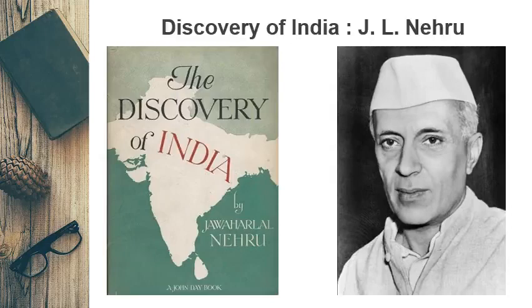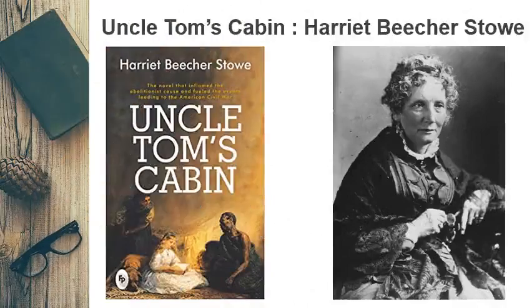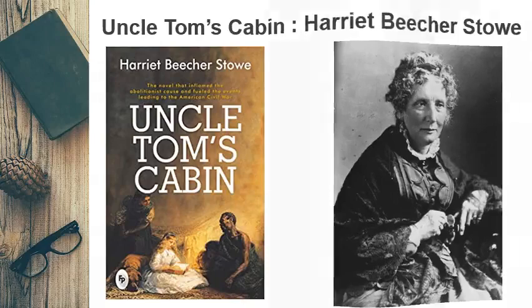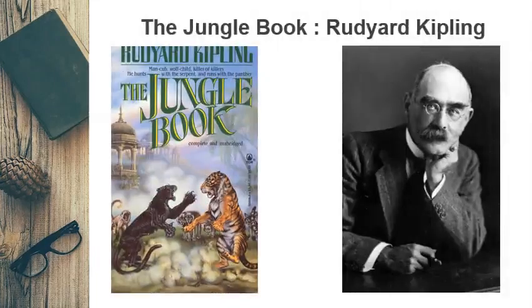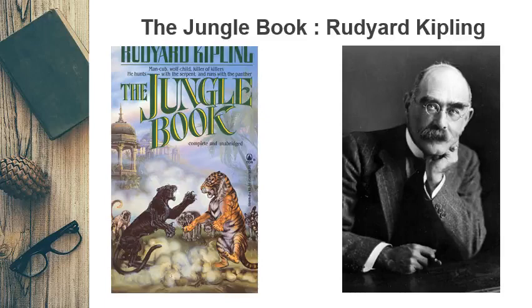The eighth book is Uncle Tom's Cabin. It is an anti-slavery novel by American author Harriet Beecher Stowe. The ninth book is Jungle Book — the Jungle Book is a collection of stories by English author Rudyard Kipling. The main character is the boy or man-cub Mowgli, who is raised by wolves in the jungle.